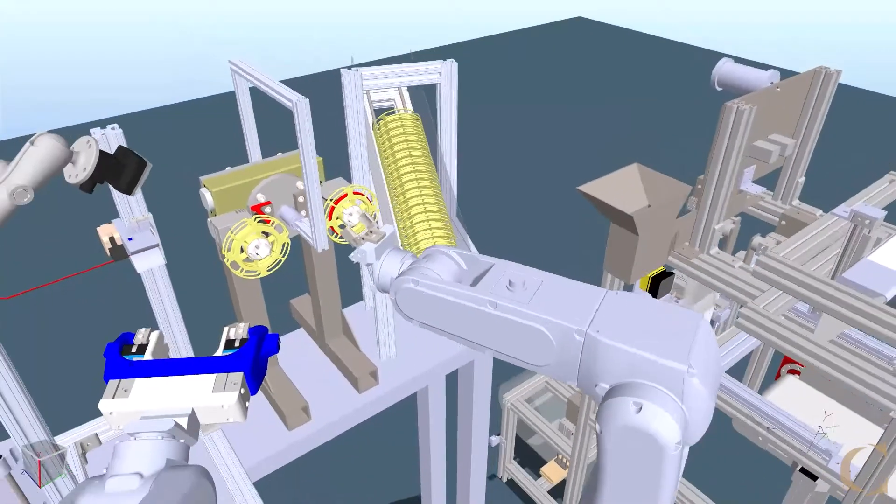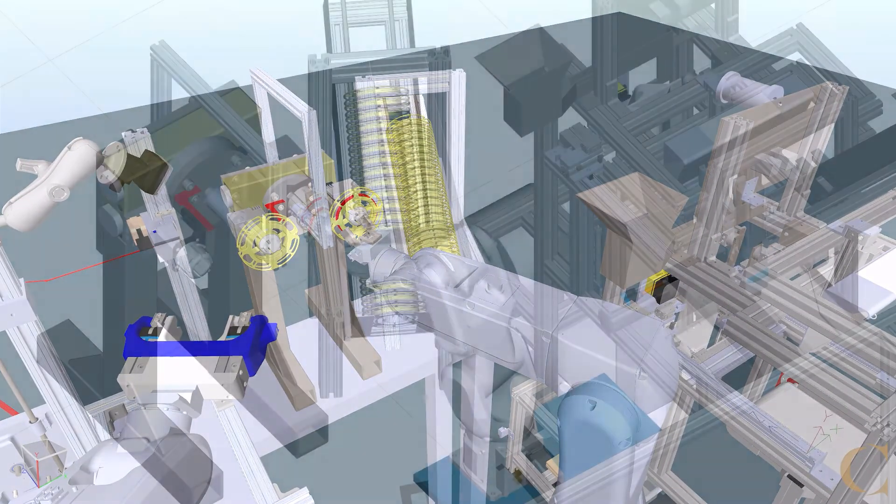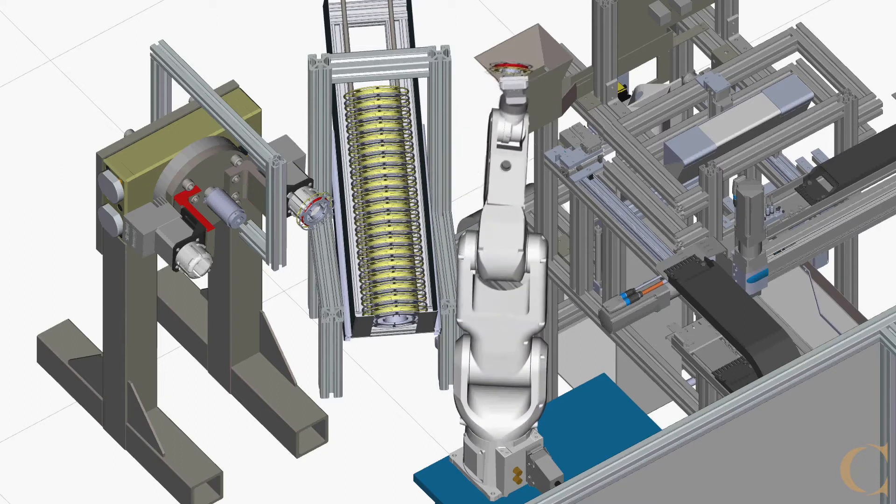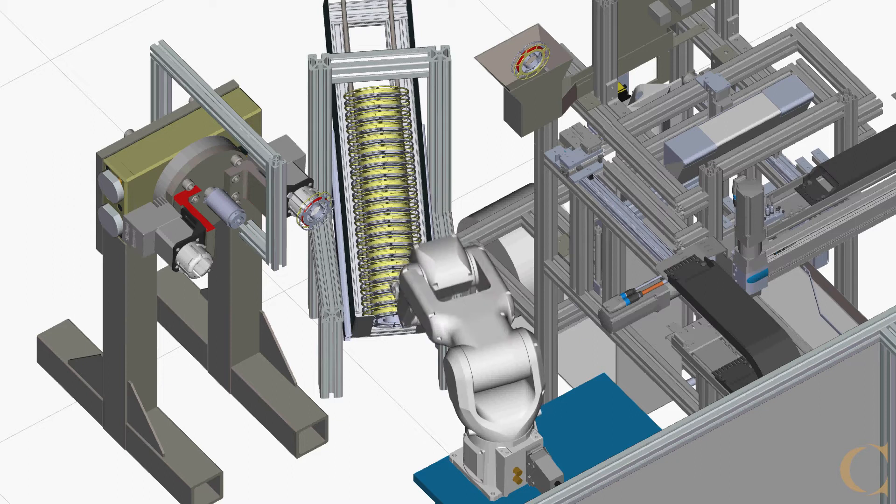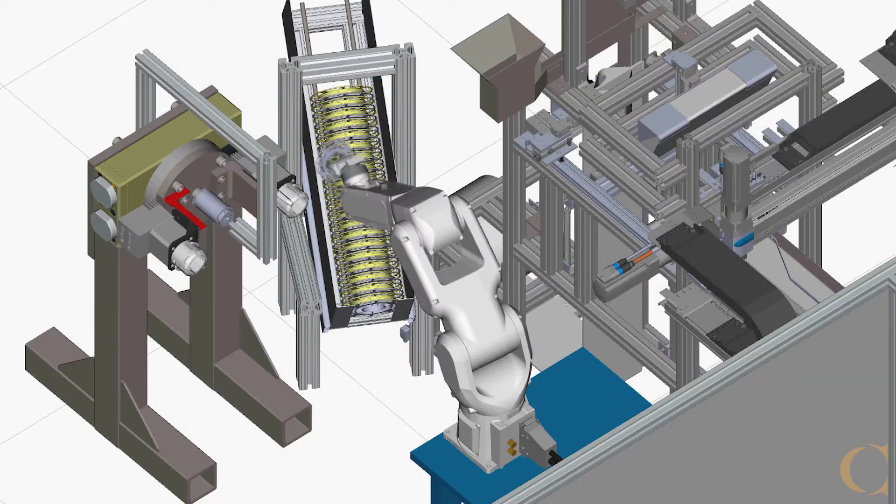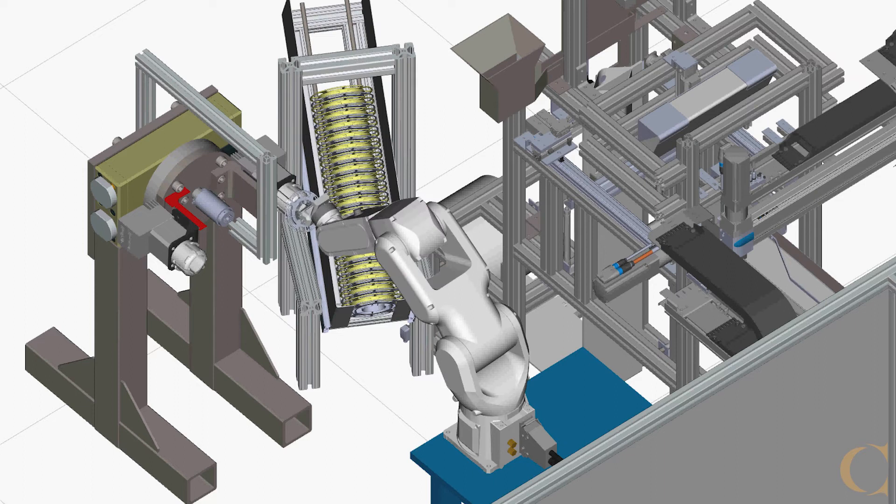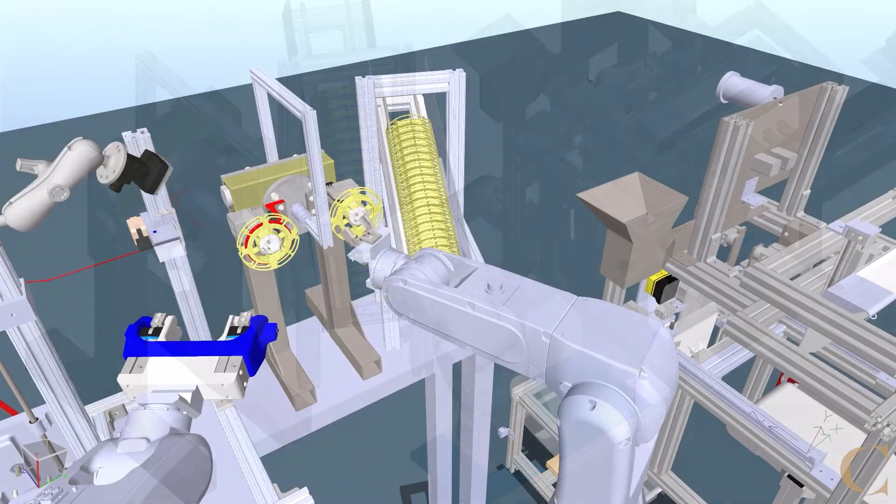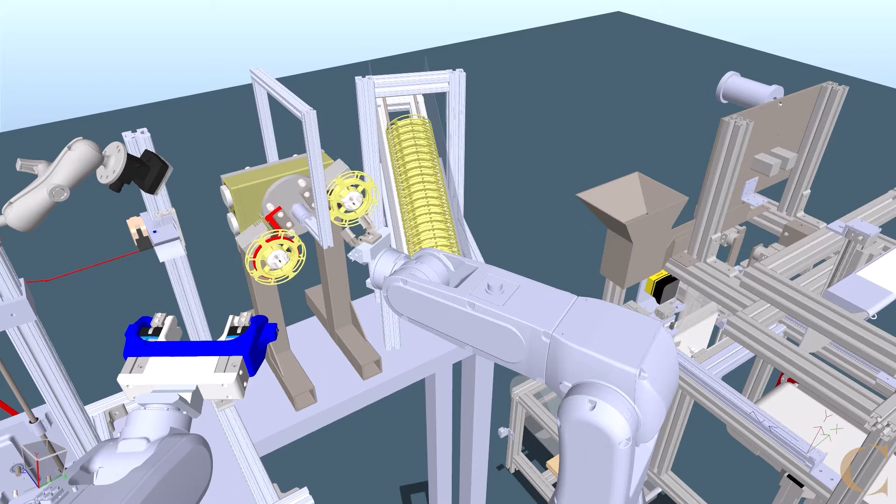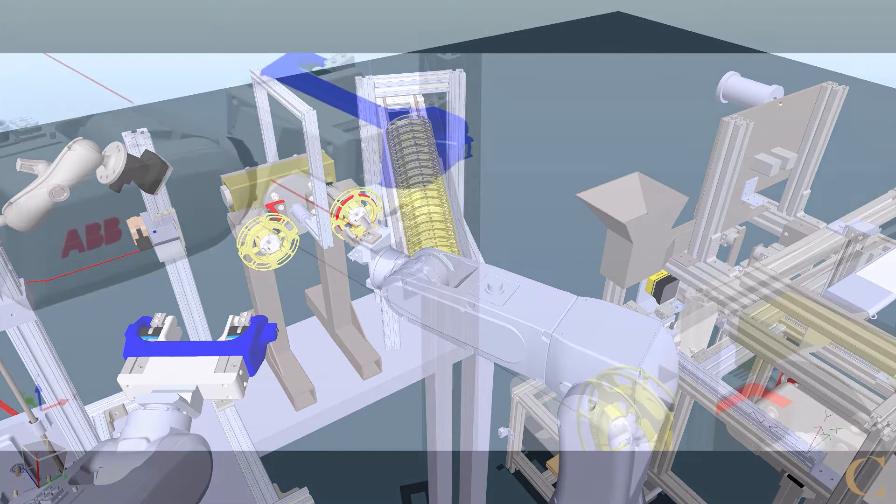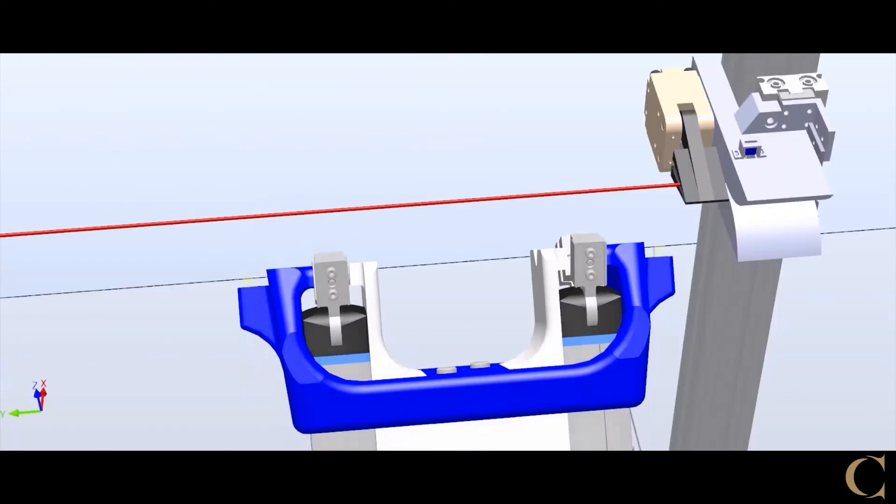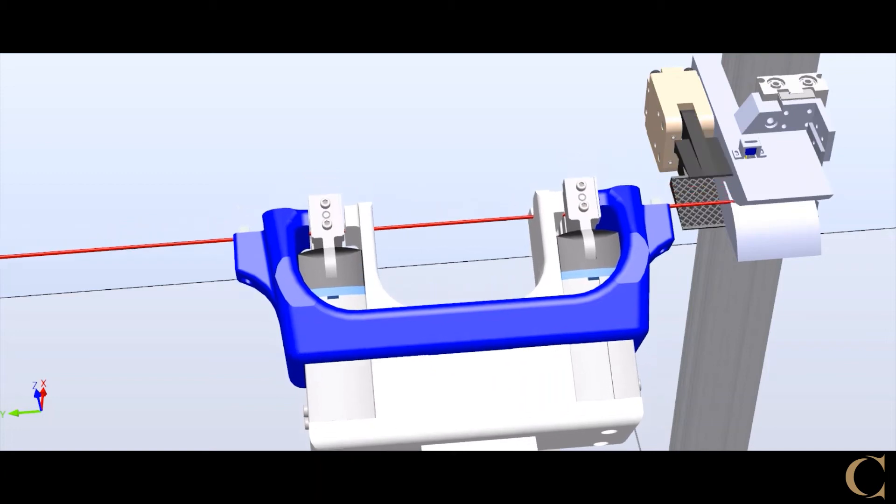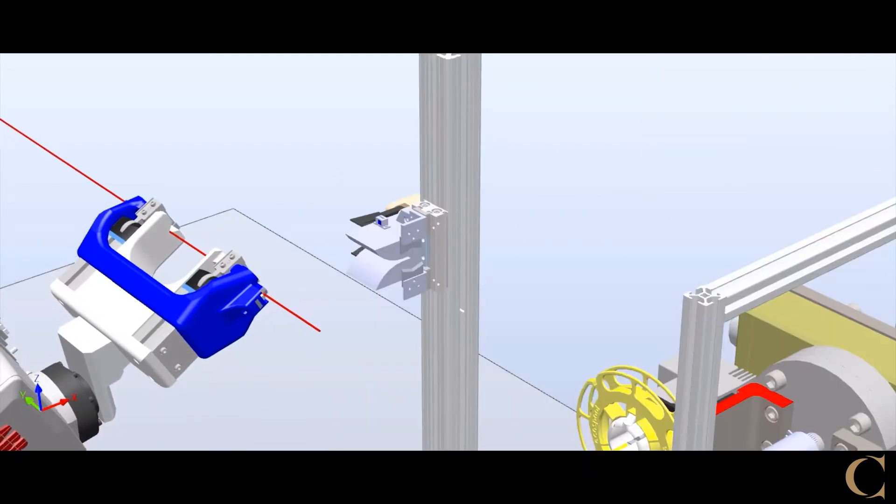The finished spool is then indexed to the other side where a Fanuc robot places it into a bagging station. The Fanuc robot places a fresh empty spool onto the spooler, ready to be swapped out when the next spool is completed. The ABB robot initiates the spooling process by taking the leading strand of filament from the holding station and securing it into an insertion hole at the center of the empty spool.